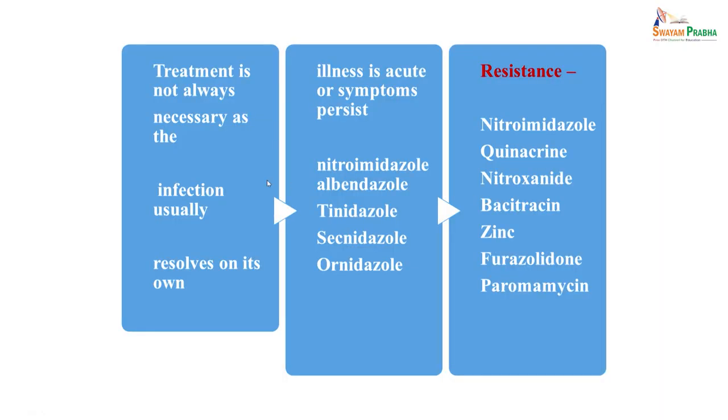Treatment is not always necessary as the infection usually resolves on its own, but when illness is acute or symptoms persist, drugs such as nitroimidazole, albendazole, tinidazole, secnidazole, or ornidazole can be used. However, resistance is developing to these drugs, so one may have to use quinacrine, nitazoxanide, bacitracin zinc, furazolidone, or paromomycin in the long run.